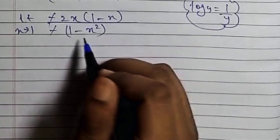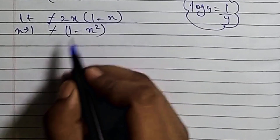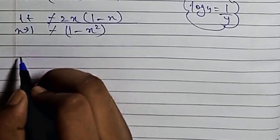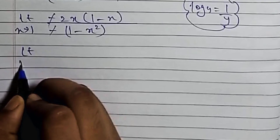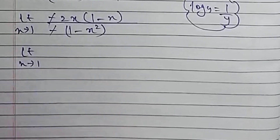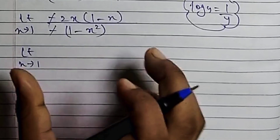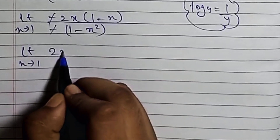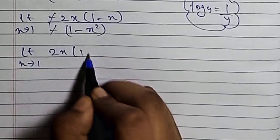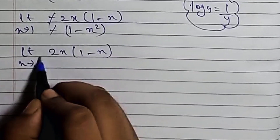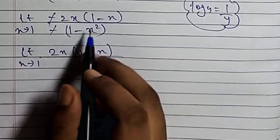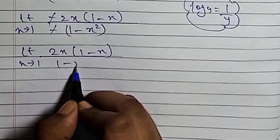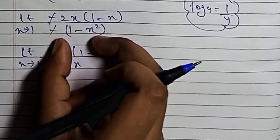So now we are going to simplify it. We are going to simplify it — 1 minus 4, we have 1 minus 8 squared.